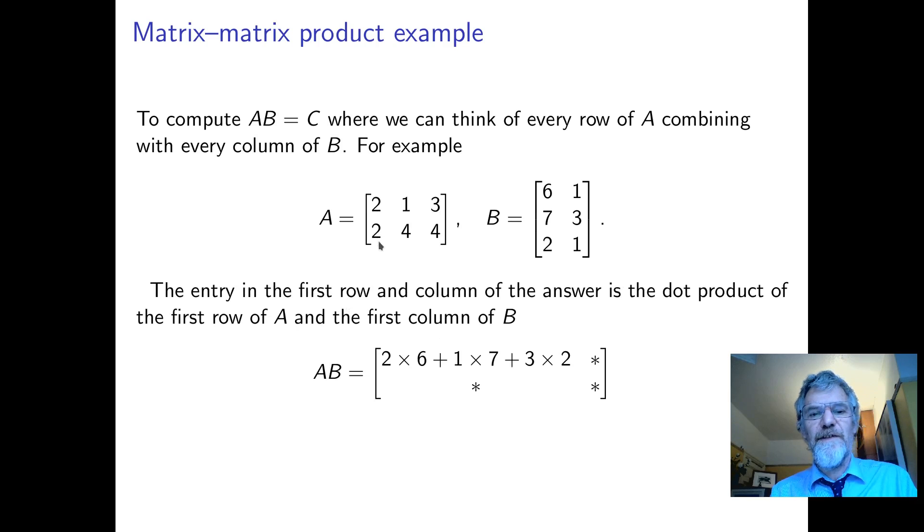So let's see how that works out. So the first entry, we get the first row and the first column. So we get two times six plus one times seven plus three times two.